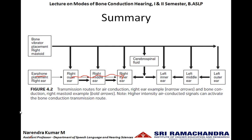Whenever the intensity of the AC transducer is increased, the diaphragm of the AC transducer vibrates with greater amplitude. This can induce bone conduction hearing at higher intensities. So an air conduction transducer at higher intensities can induce bone conduction hearing, activating both cochleae. That is why we need to mask the non-test ear to identify the actual threshold of the test ear.